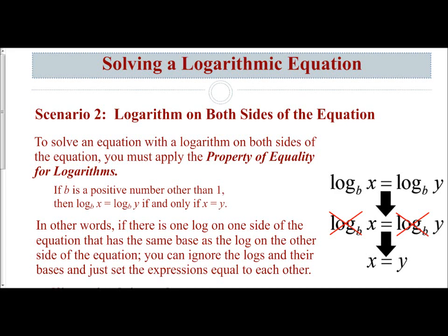The second scenario we're going to be examining with solving logarithmic equations is when you have a logarithm on both sides of the equation. To do this, we're going to have to apply the property of equality for logarithms, which mathematically is defined as: if b is a positive number other than 1, then log base b of x equals log base b of y if and only if x equals y.